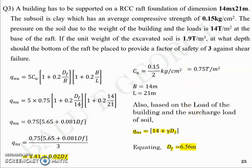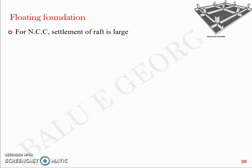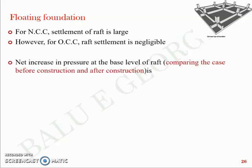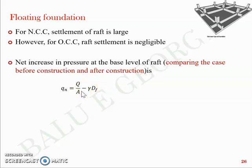In continuation, we will discuss a term called 'float.' For normally consolidated clay (NCC), settlement of the raft is usually very large, but for over-consolidated clay (OCC) the raft settlement would be quite negligible. The net increase in pressure at the base level of the raft — comparing conditions before and after construction — can be written as: net pressure = load/area minus the stress due to soil (γ·DF).